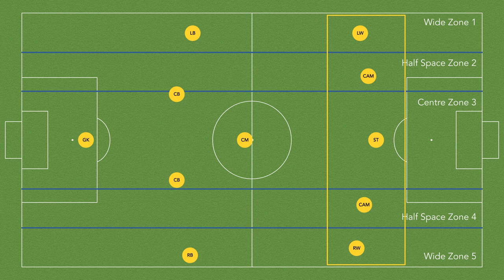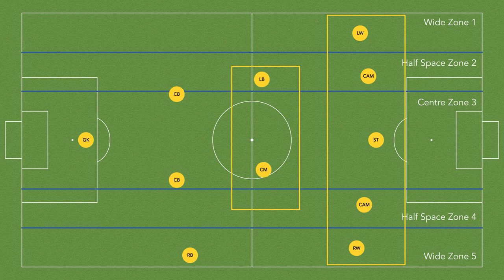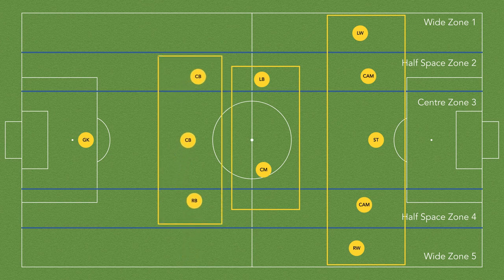Now one fullback will become inverted and play in either zones 2 or 4. This will depend on which fullback inverts — this may be pre-planned or it may be which side the ball is on. This will create the middle line of 2. The fullback that doesn't invert will play more centrally with the two centre backs, creating three players in the defensive line.